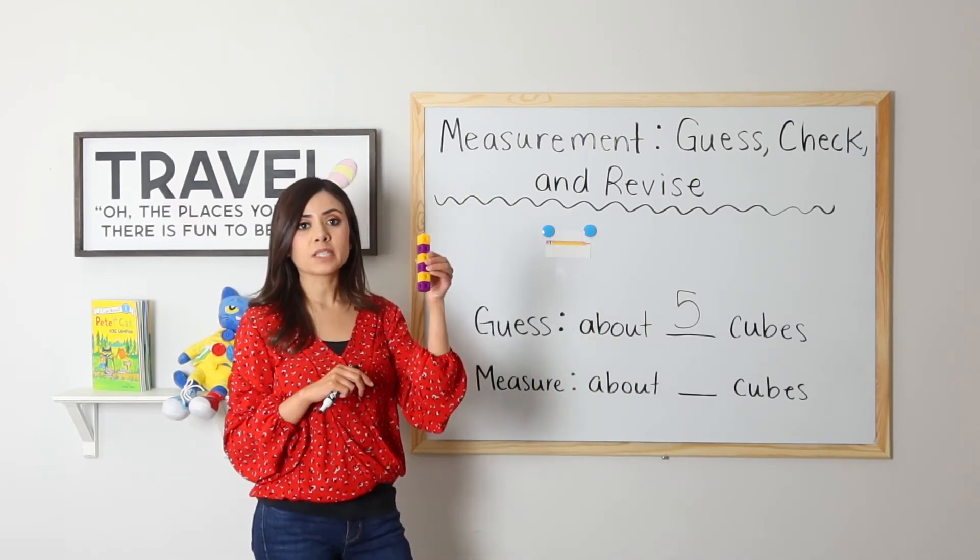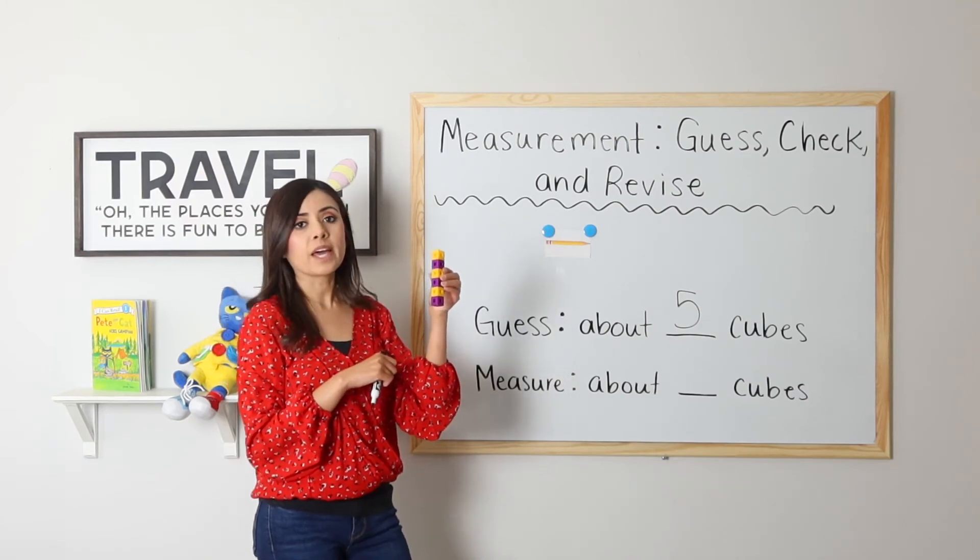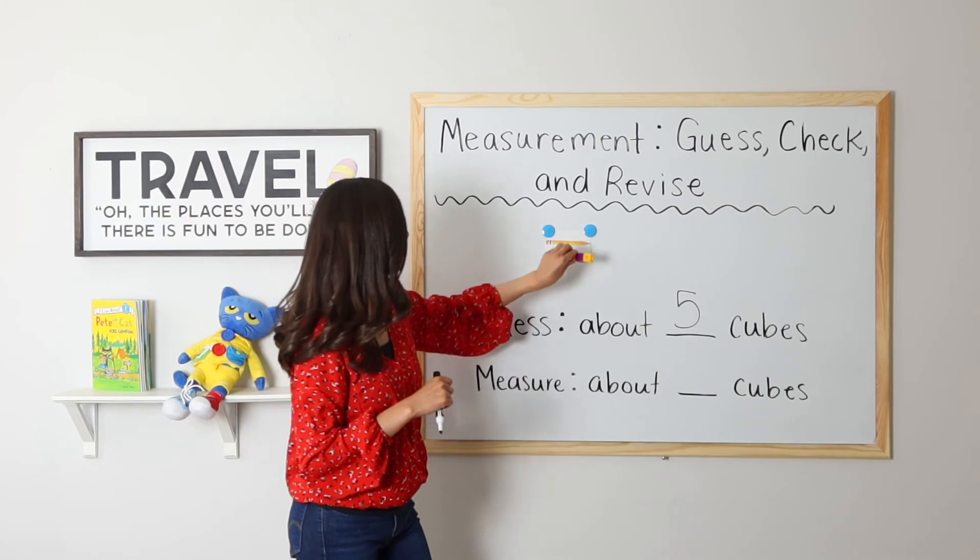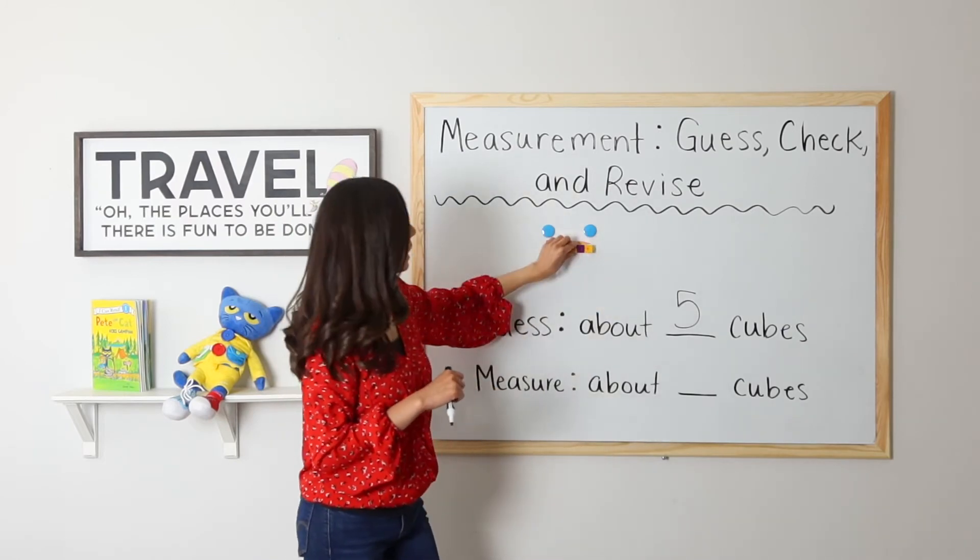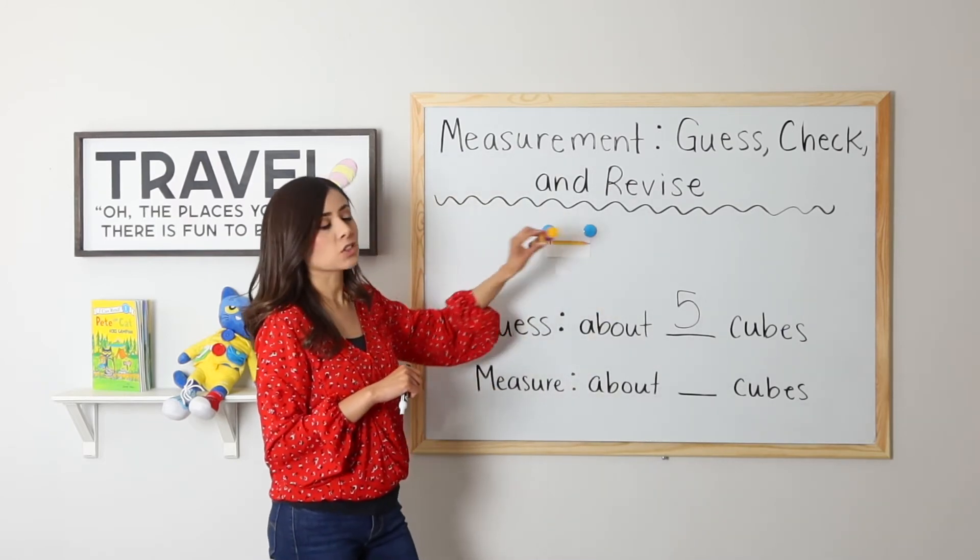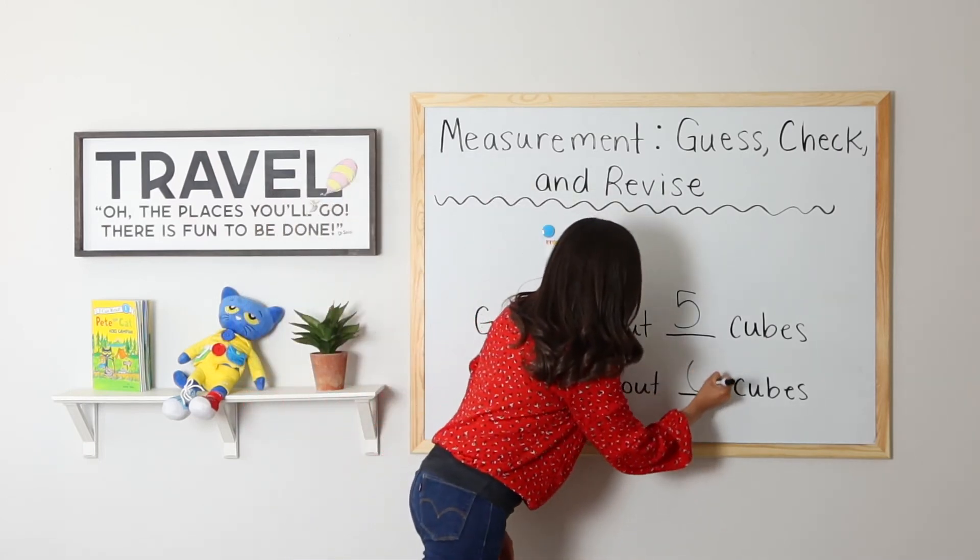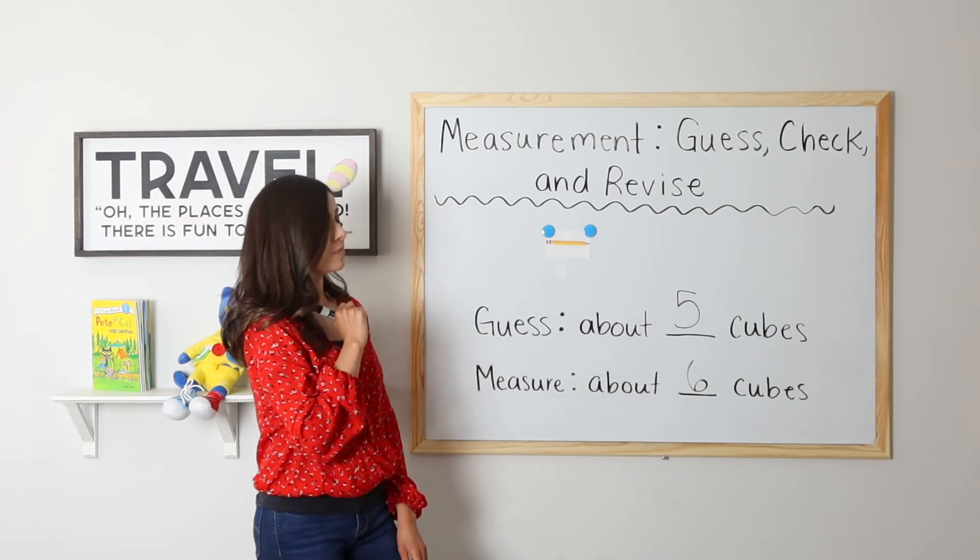So I have six cubes in my hand now. I'm going to go ahead and connect it from end to end to see if this is a better match. Yes, this is definitely a better match. So after measuring, we see that it is about six cubes. Very good.